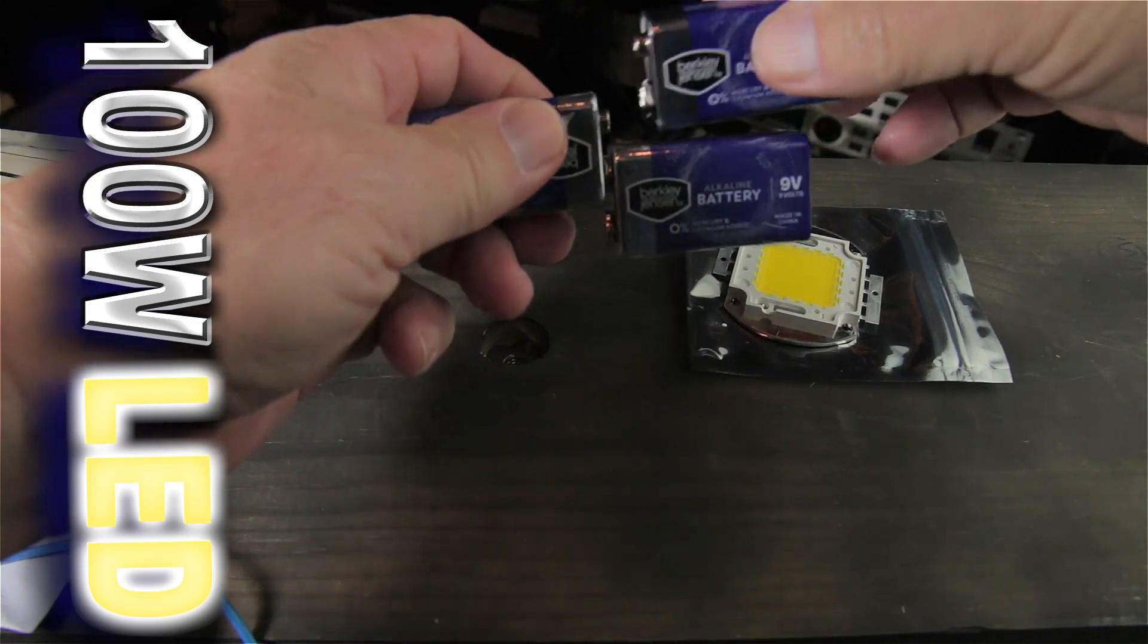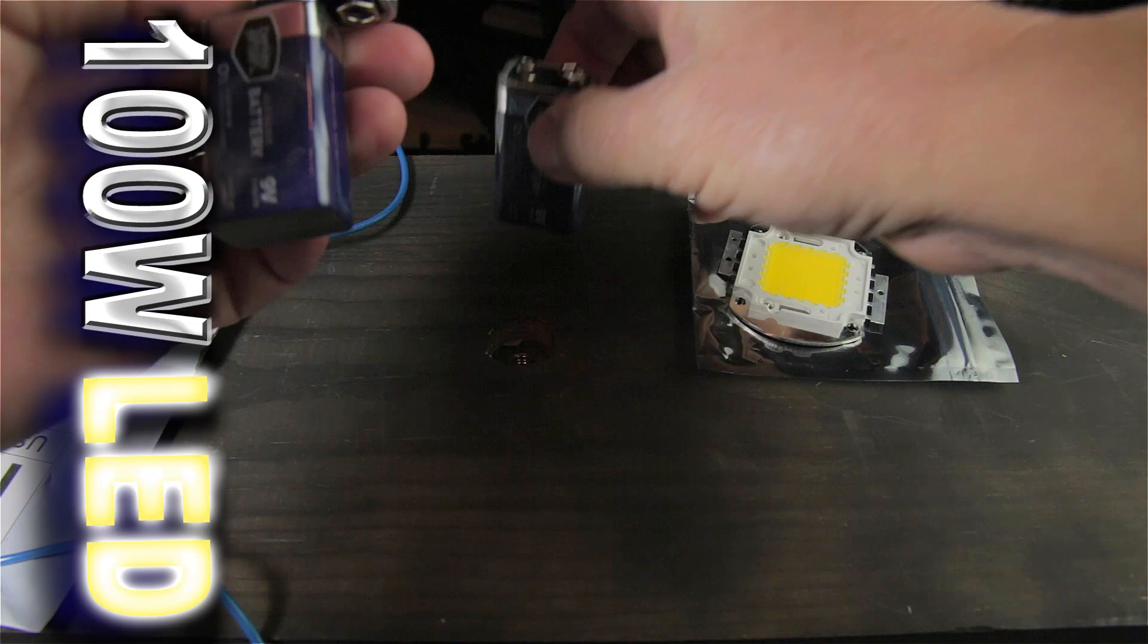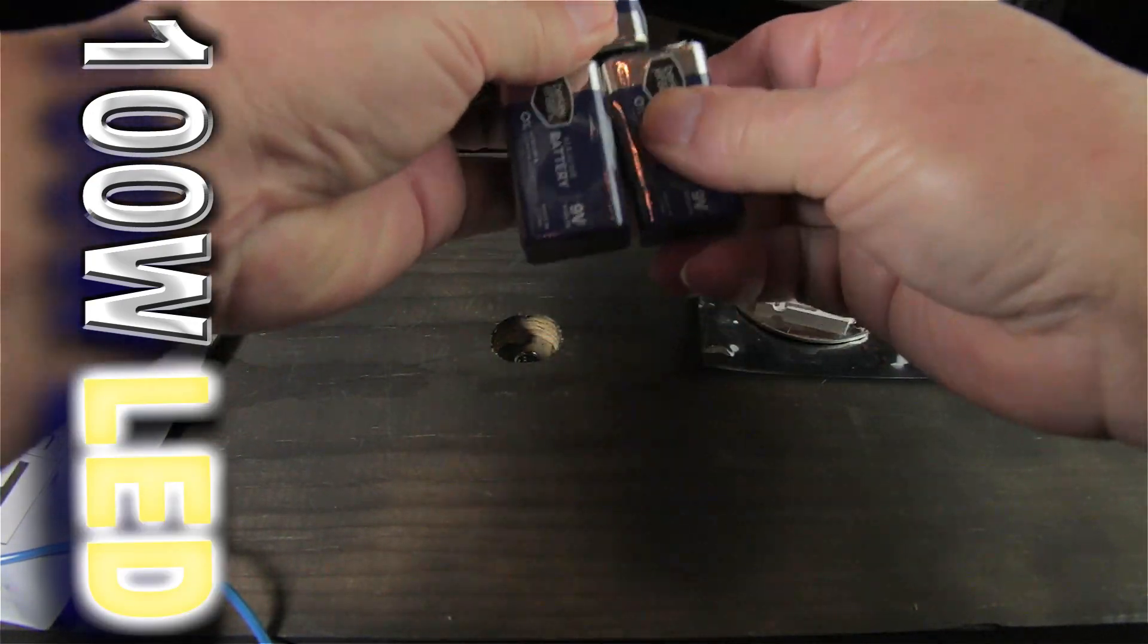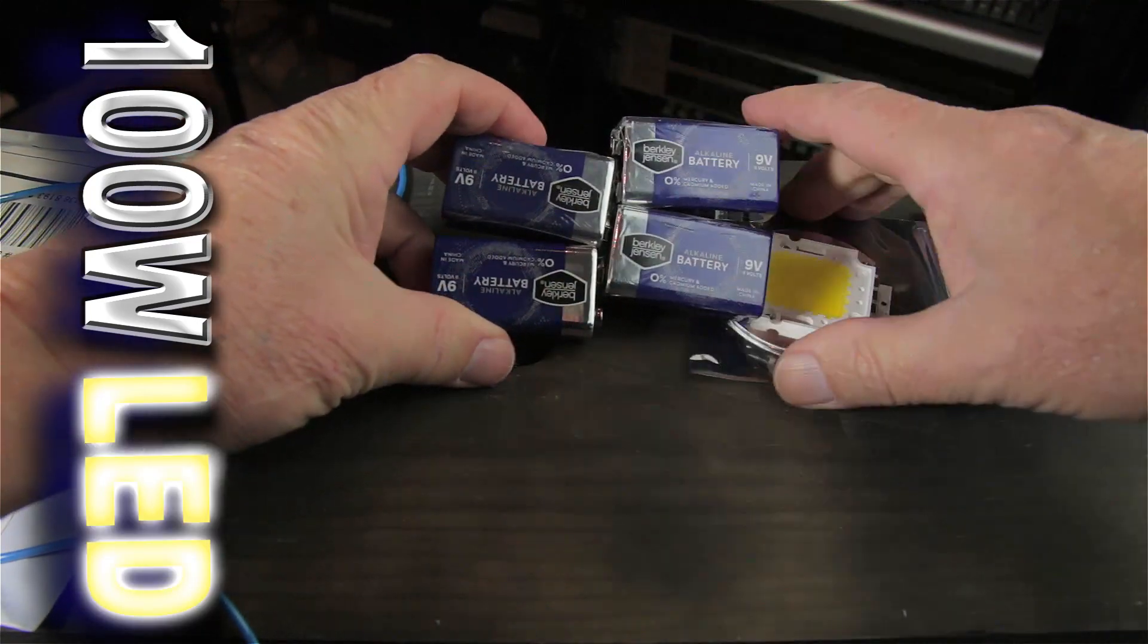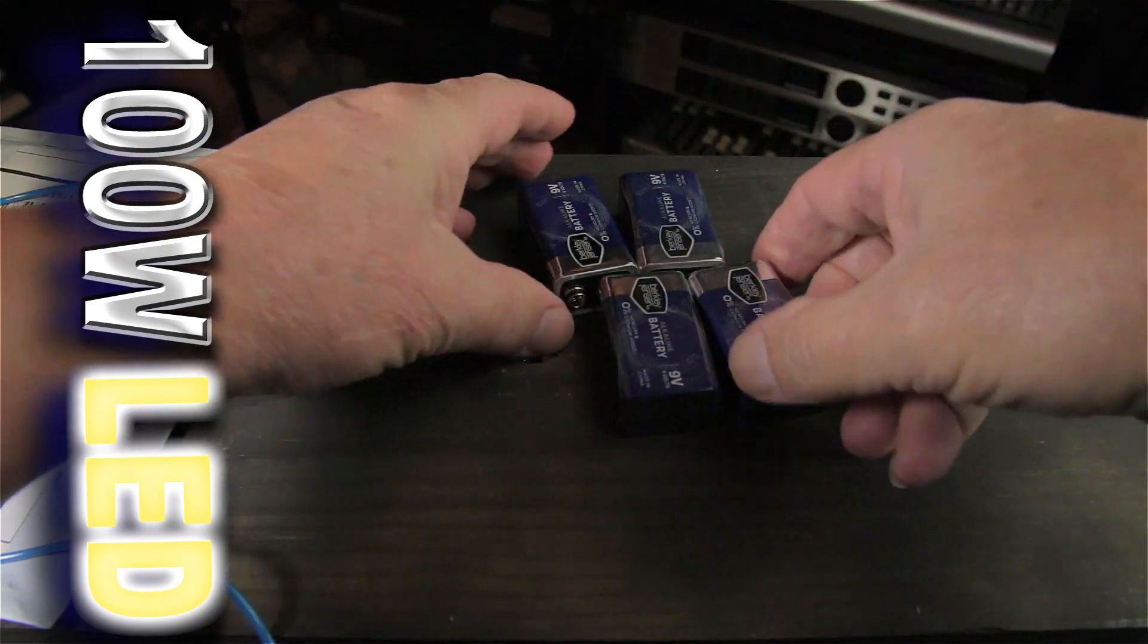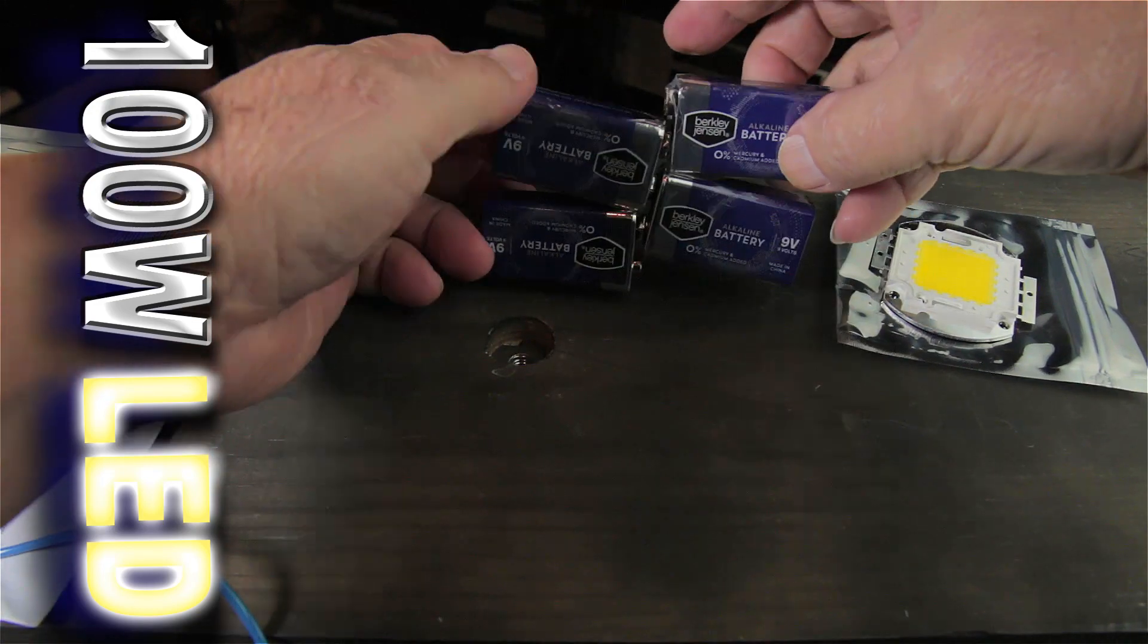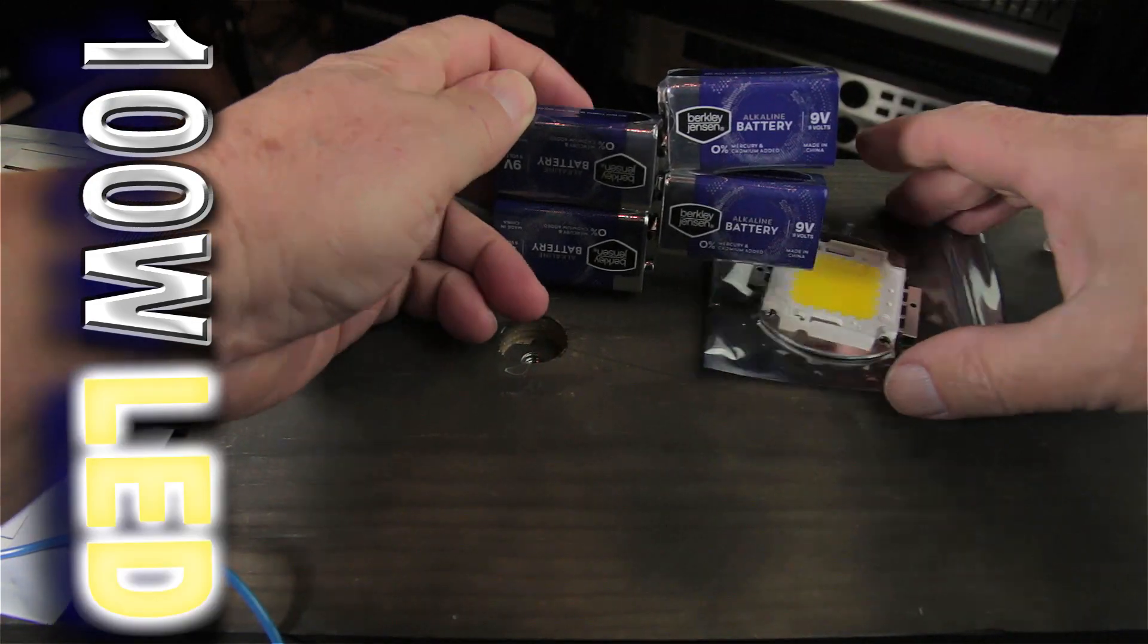Minus to plus, minus to plus, and minus to plus. So now I have four of them connected and if you take the current between these two contacts it should be around 36 volts. That will work fine to check this chip.